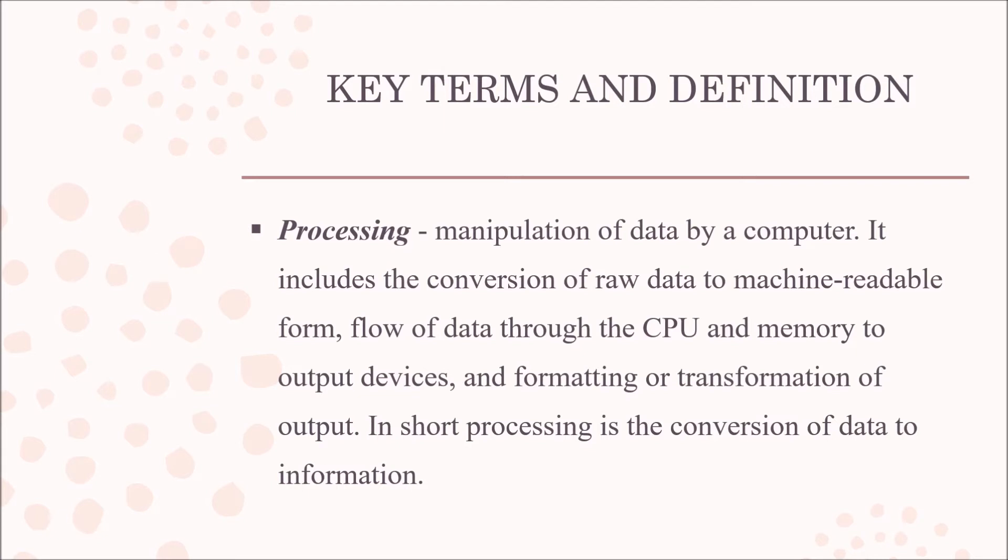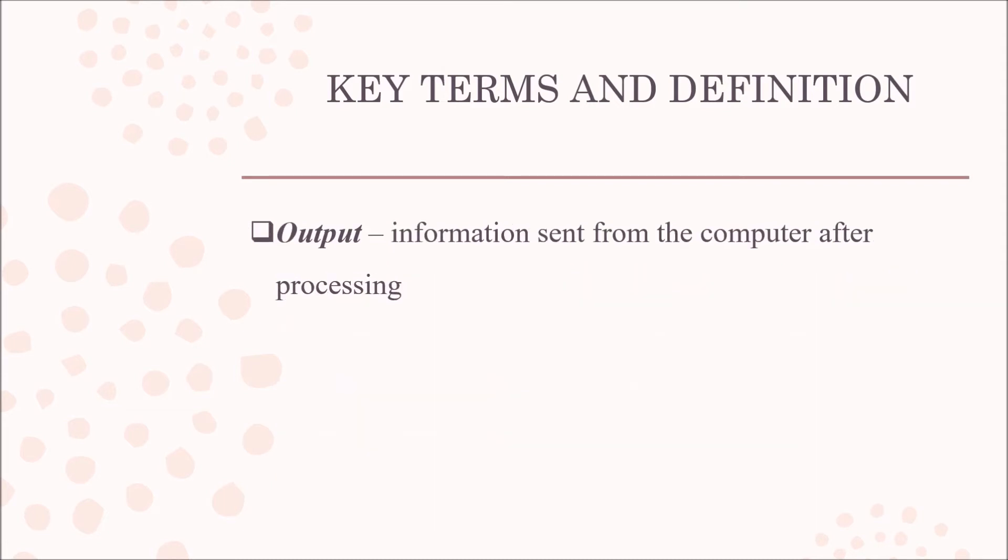When data is entered into the computer system, it must be processed, meaning it must be changed or manipulated or transformed into something else in order for it to make sense to the user. Now it can come in different forms. The data can come in text, it can come in audio files, it can come in pictures, like I said before, however it must all be processed by the computer system so that you, the user, can interact with it in a real way.